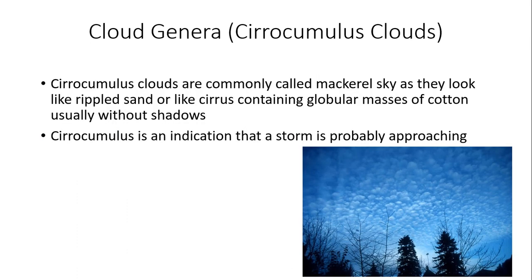Now we turn to cirrocumulus clouds, commonly called the mackerel sky, as they look like rippled sand or like cirrus containing globular masses of cotton. They're usually without shadows. Cirrocumulus is an indication that a storm is probably approaching and there's a lot of moisture in the upper levels of the atmosphere. The bottom right picture shows an example of what cirrocumulus look like — one of my favorite clouds, with many pictures available on the Spot on Weather Weebly website under the Weather Photo Gallery.